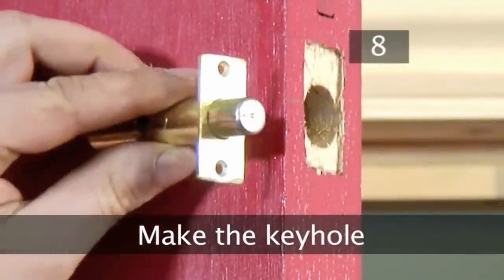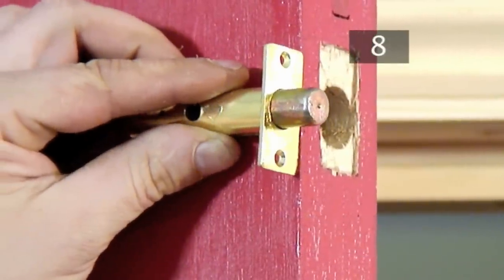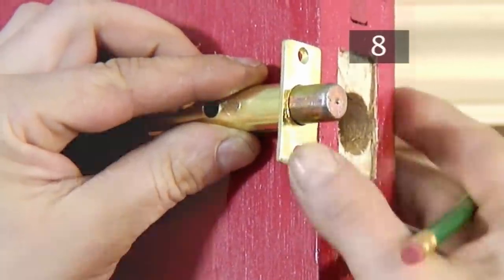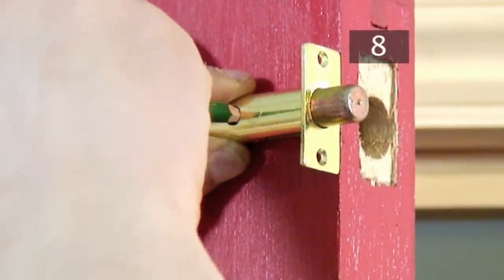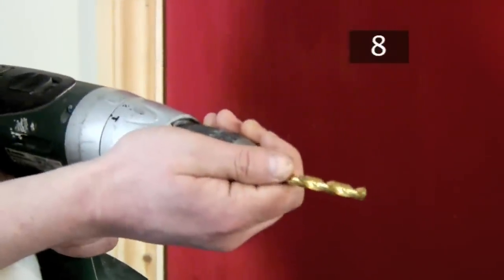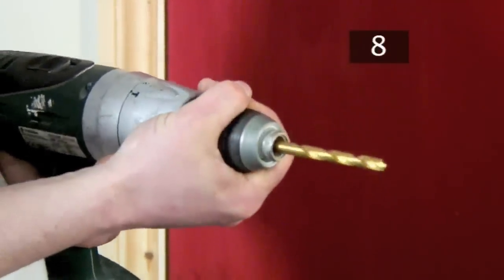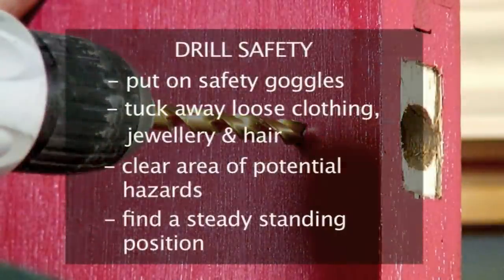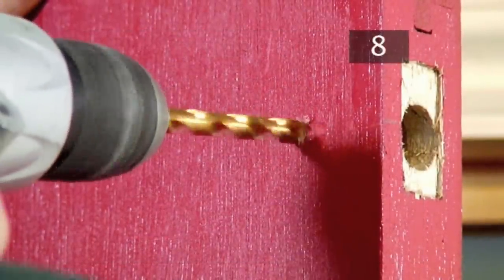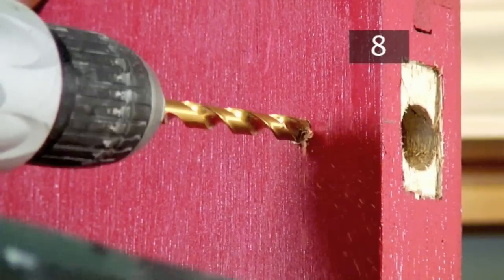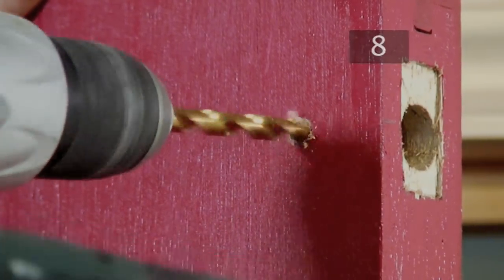Step 8. Make the keyhole. Hold the bolt against the side of the door, level with the bolt hole. Mark through the hole in the bolt barrel. This is where the keyhole will be. Select a drill bit that is slightly wider than the key. Attach it to the drill. Remember drill safety. Drill on your pencil mark. Stop when you reach the bolt hole. Be careful not to drill through to the other side of the door.